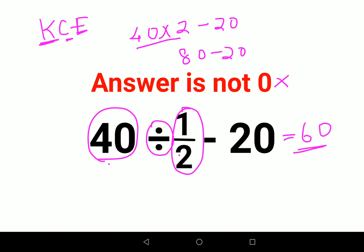I hope this is very clear to everyone. Now for your DIY, tell me what would be 60 divided by 1 upon 3 minus 30. Tell me the answer for this one in the comment section. That's it for today. I will see you in the next video.